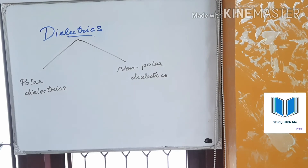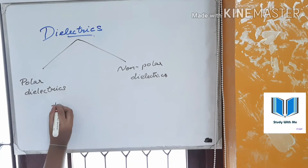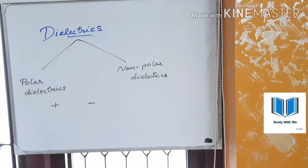There are two types: polar dielectrics and non-polar dielectrics. Let's learn in more detail. Polar dielectrics and non-polar dielectrics — I will explain polar dielectrics.